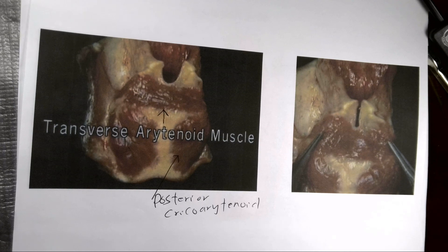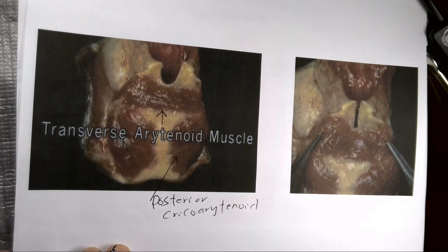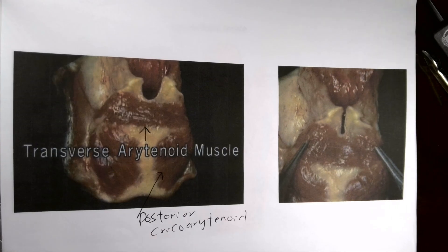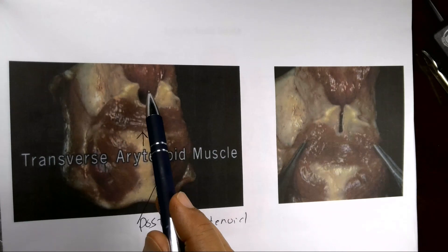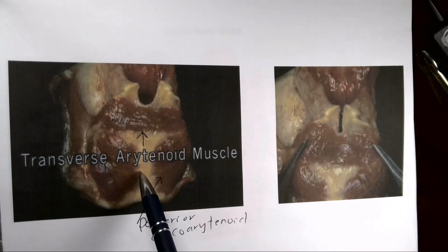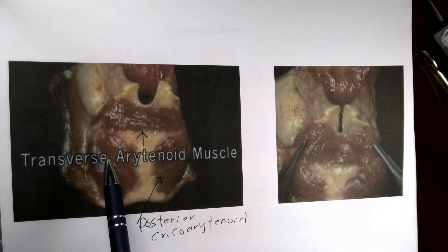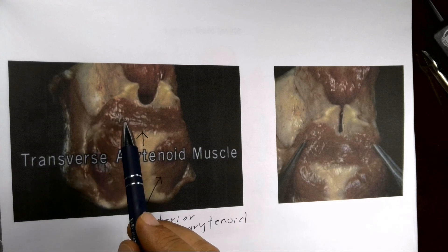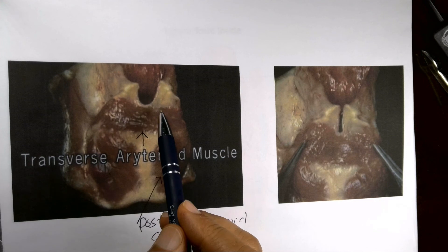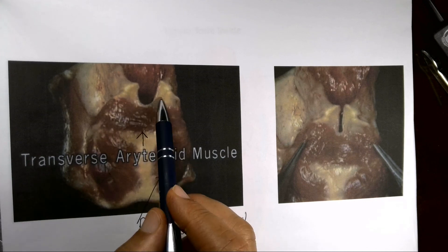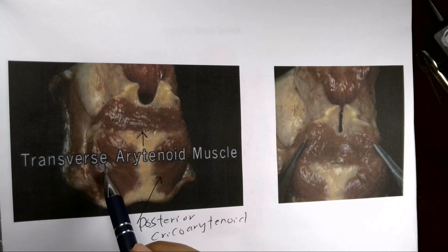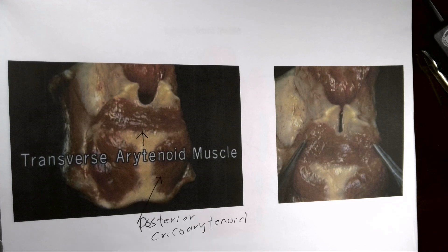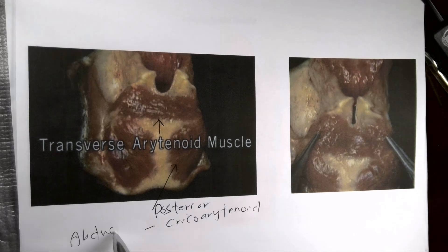This is the second part of the anatomy of the larynx — a quick refreshing of what was mentioned in the first part. This is the arytenoid cartilage on each side, and this is the cricoid cartilage, posterior aspect. The muscle between the two arytenoids is the transverse arytenoid, whose function is adduction of the vocal cord. The posterior cricoarytenoid muscle is the only abductor of the vocal cords.